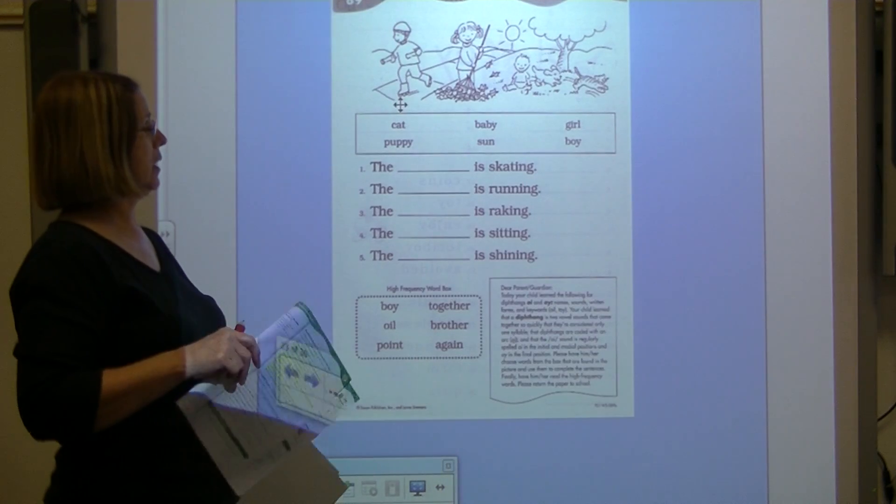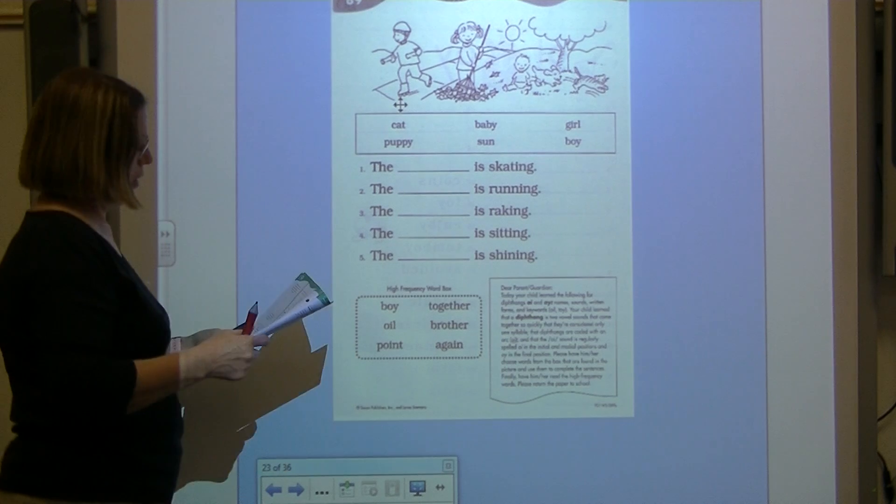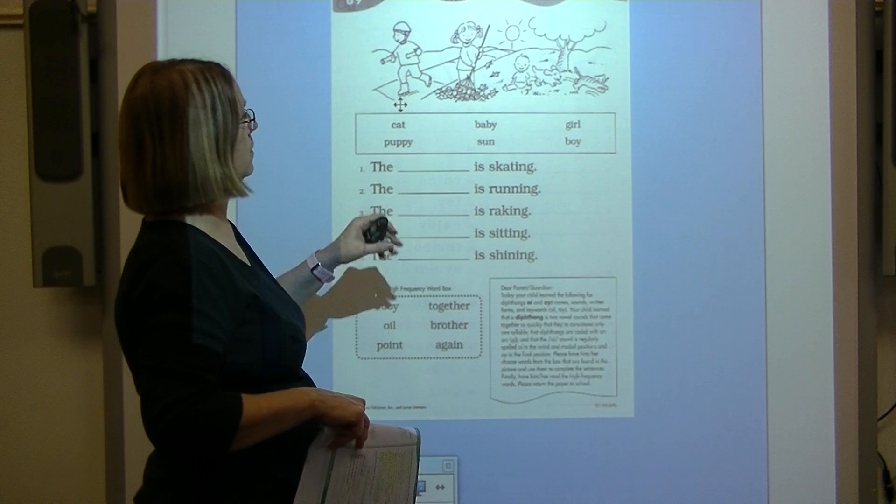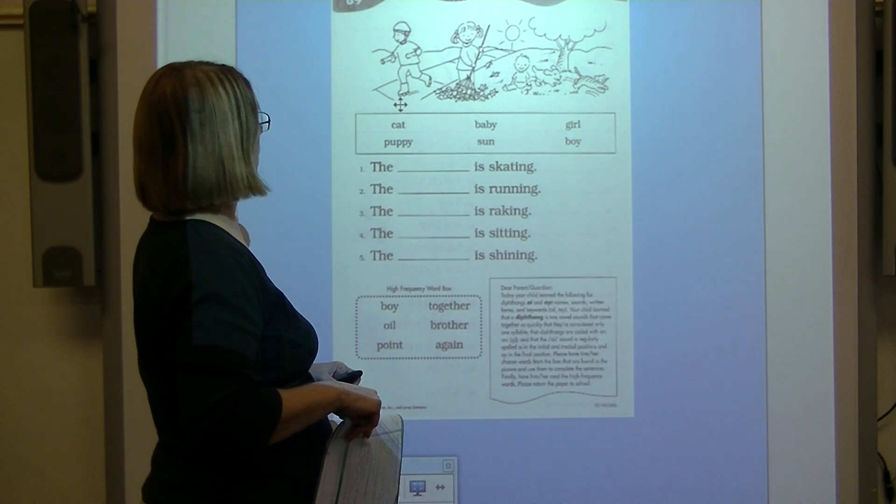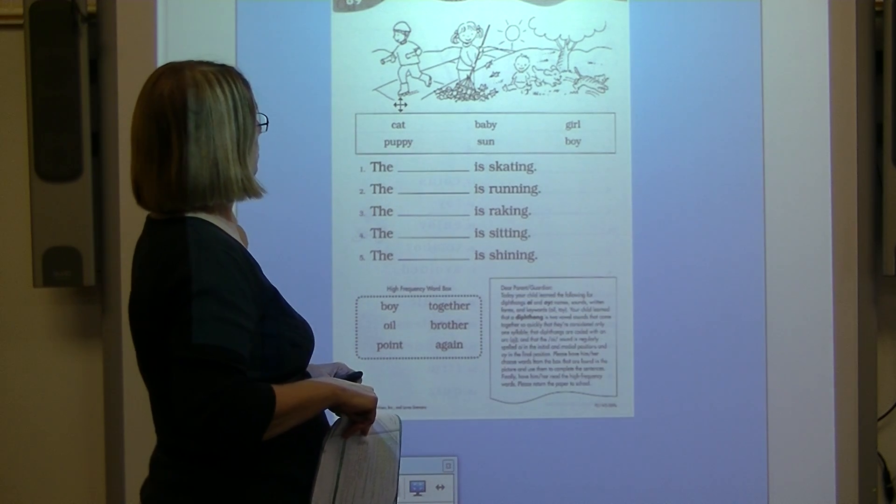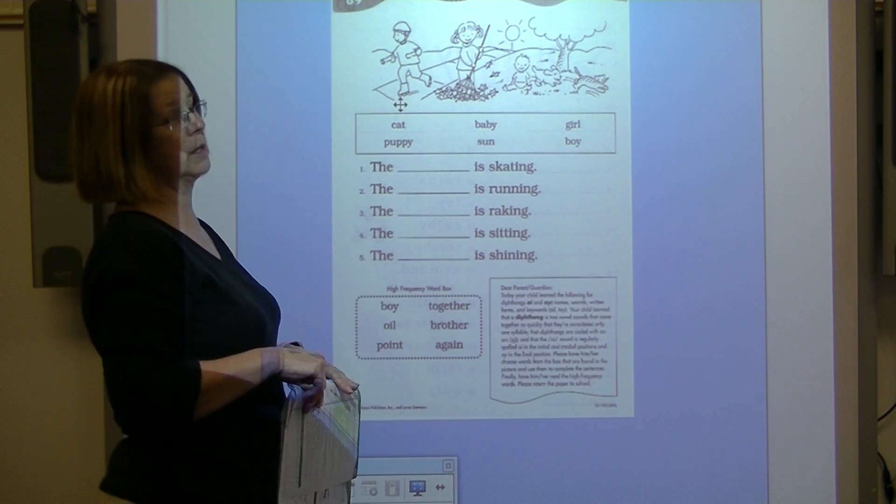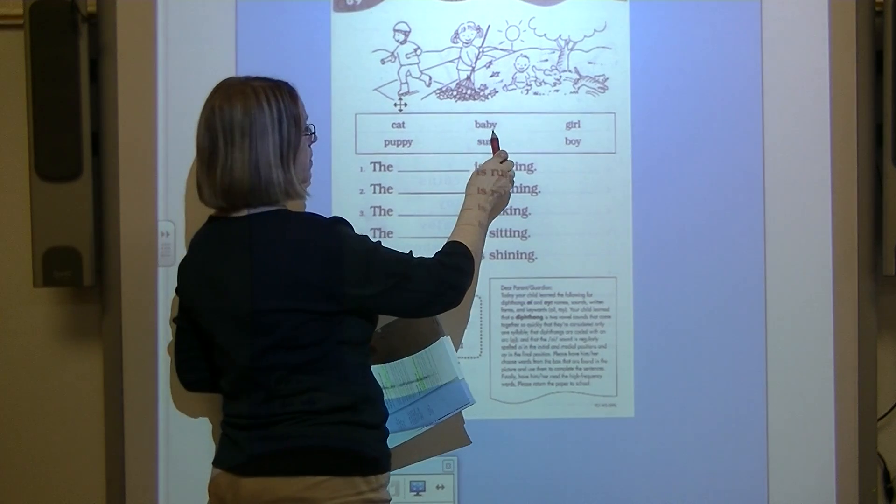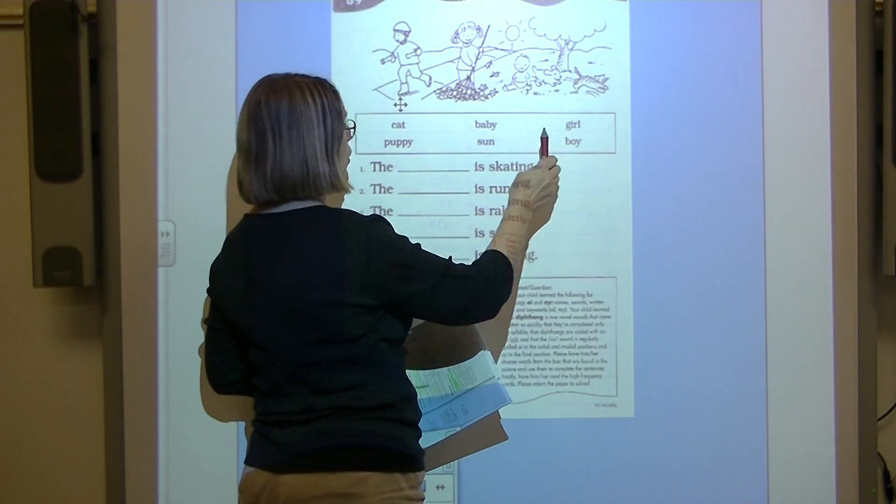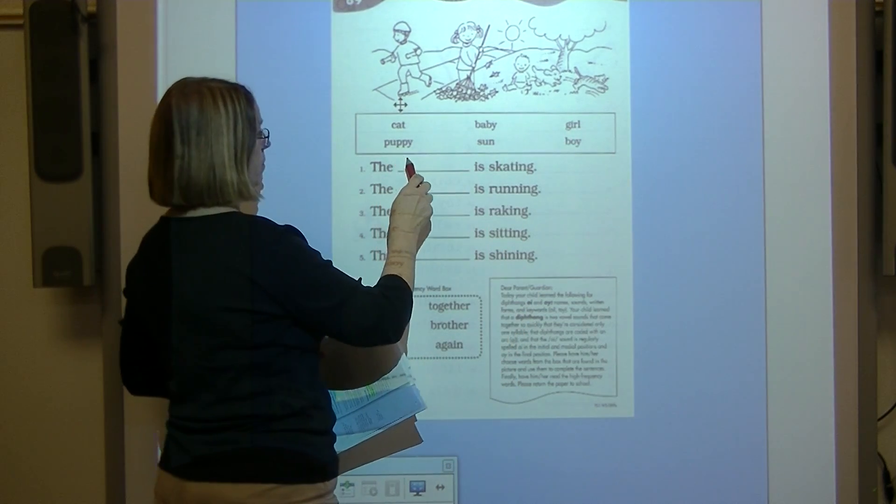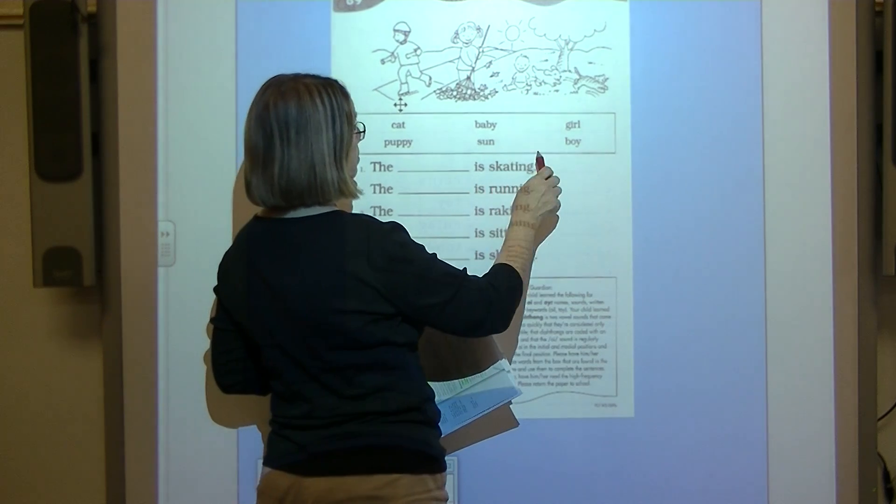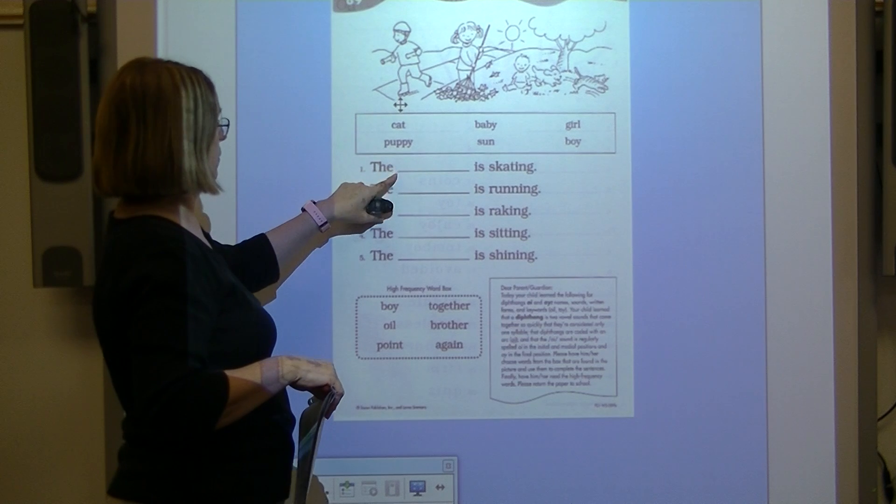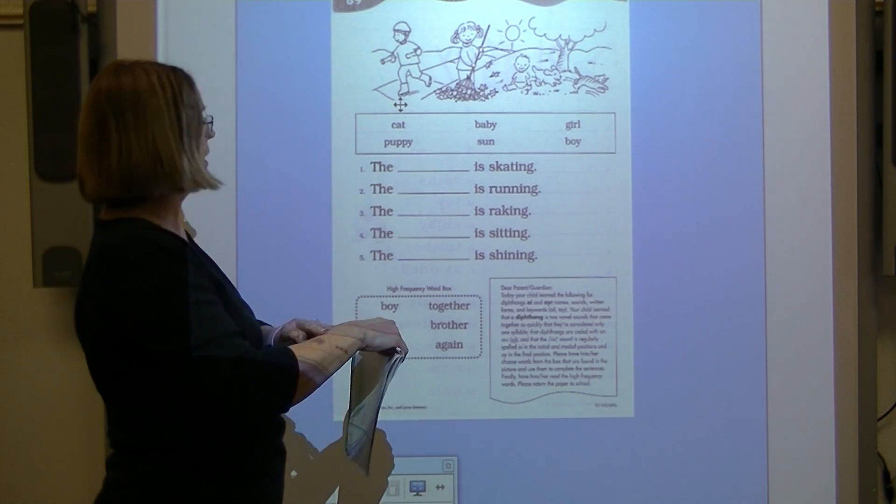Let's take a look on the back. Let's see what's happening in the picture. I want you to look at what's going on up here in this picture. Now let's read the words in the box. Read with me. Cat, baby, girl, puppy, son, boy.